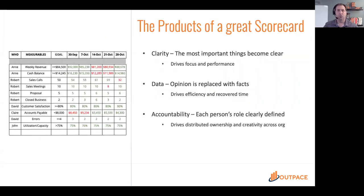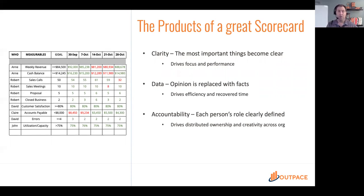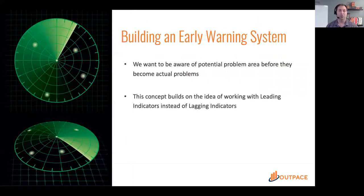When we have a great scorecard, we get a few benefits. We get clarity — these are the most important things for our department or business. We have data, so we don't have to spend lots of time talking about what we think happened; we get to look at it with numbers. And it drives accountability, because every one of these measurables has an owner — we know who is responsible for what.